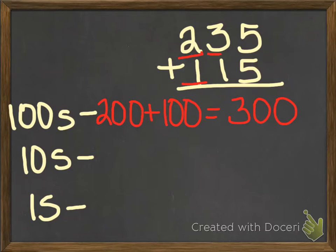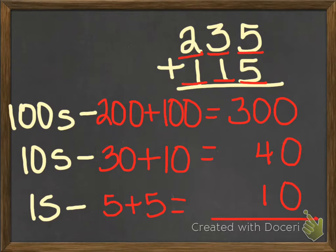Then we're going to move over to our tens. We have a 3 and a 1. The 3 is worth 30, and the 1 is worth 10. So when we add those together, that equals 40. And then we have a 5 and a 5 in our ones. So we're going to add 5 plus 5, and that's going to give us 10. So we're going to add all of those together, and our answer is 350.